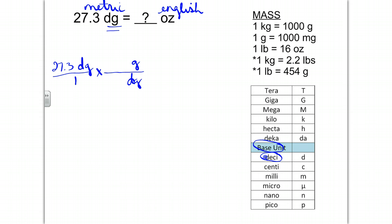Between the two of these, gram is a larger unit, so we're going to give it a 1. And then decigram is 1 move down, so that's going to be equal to 10.